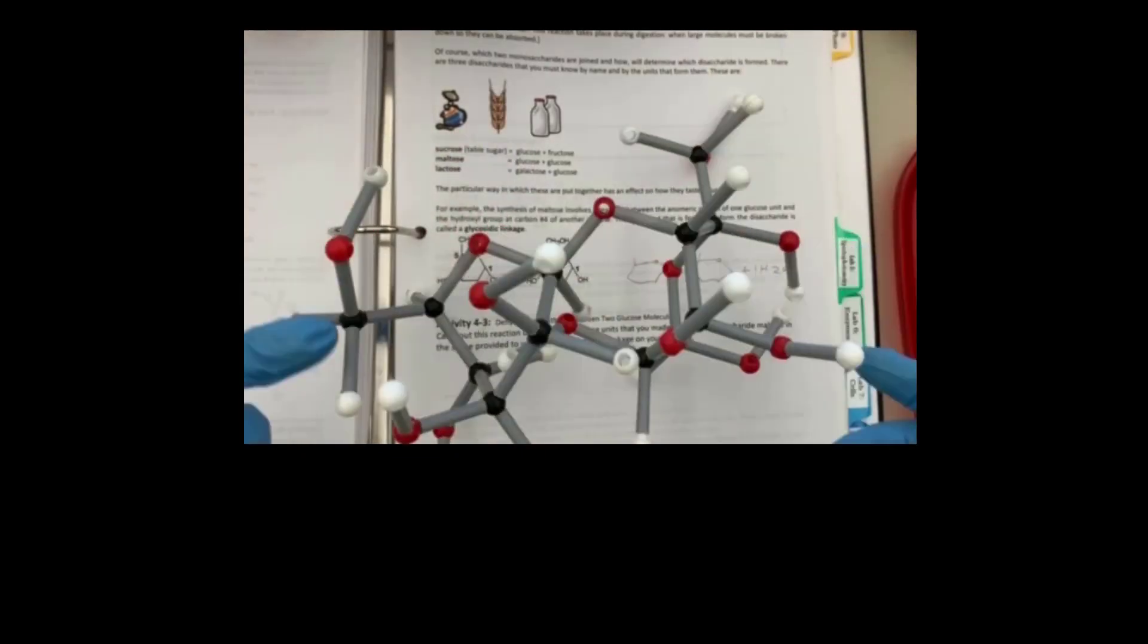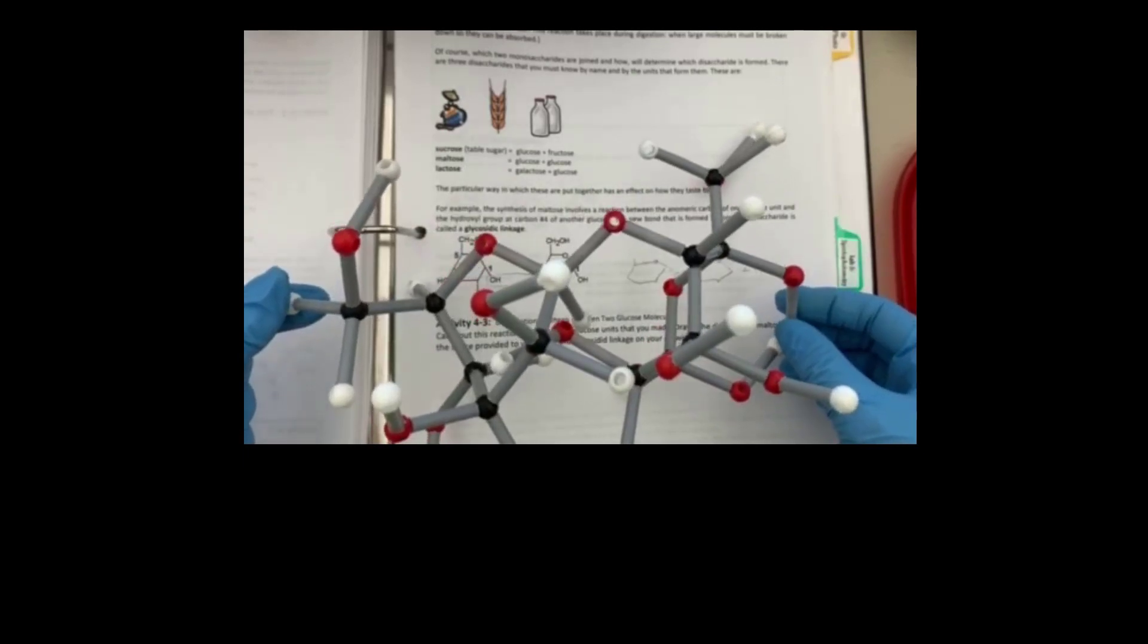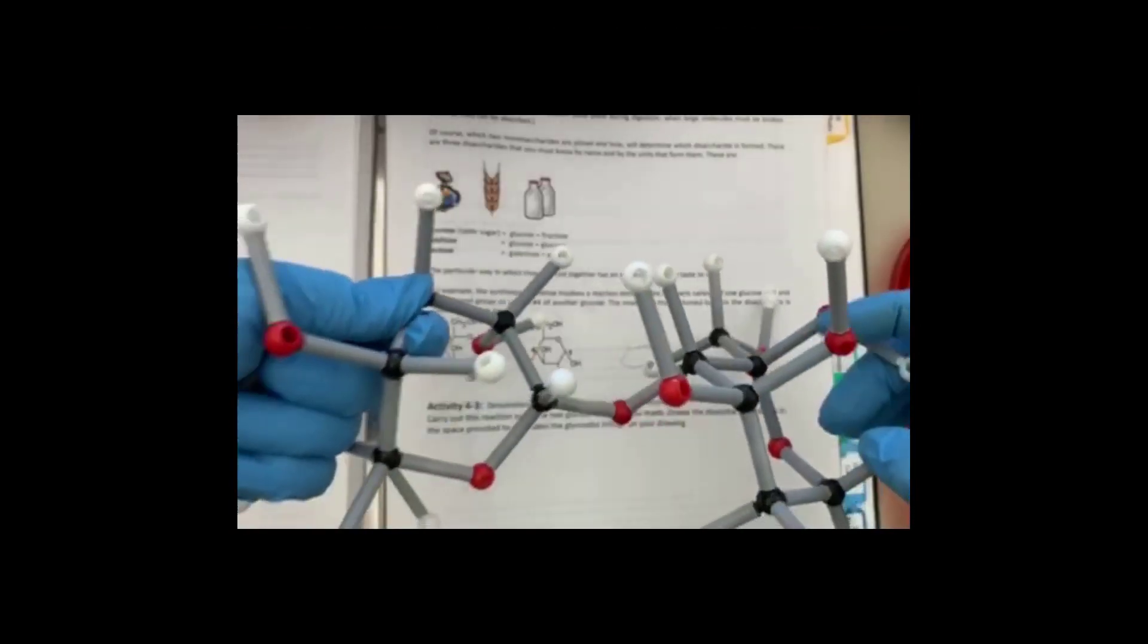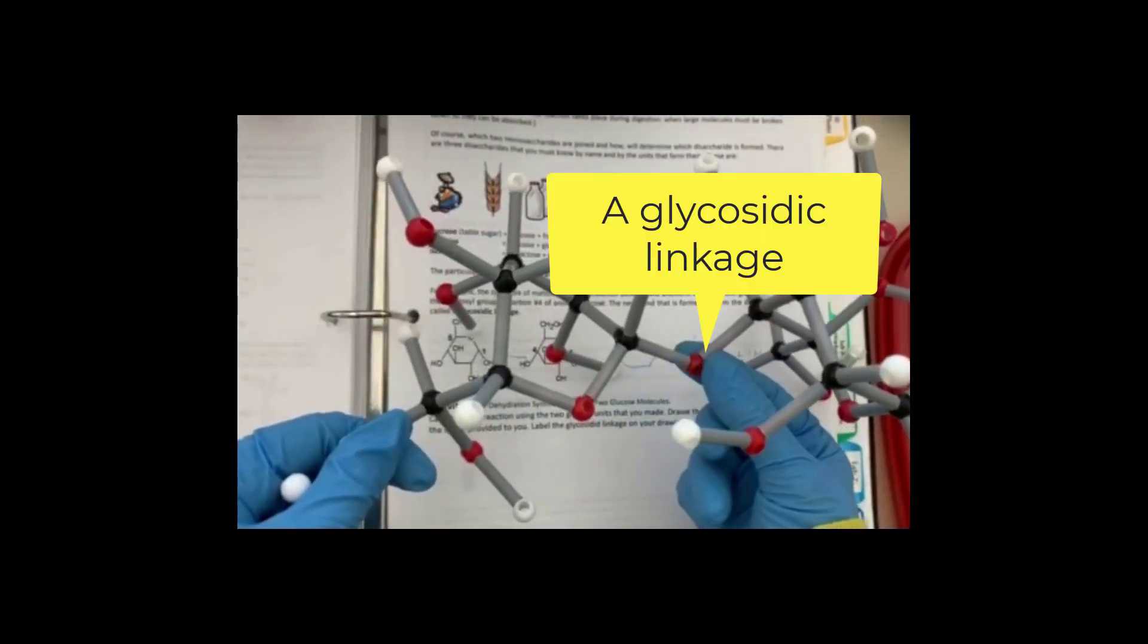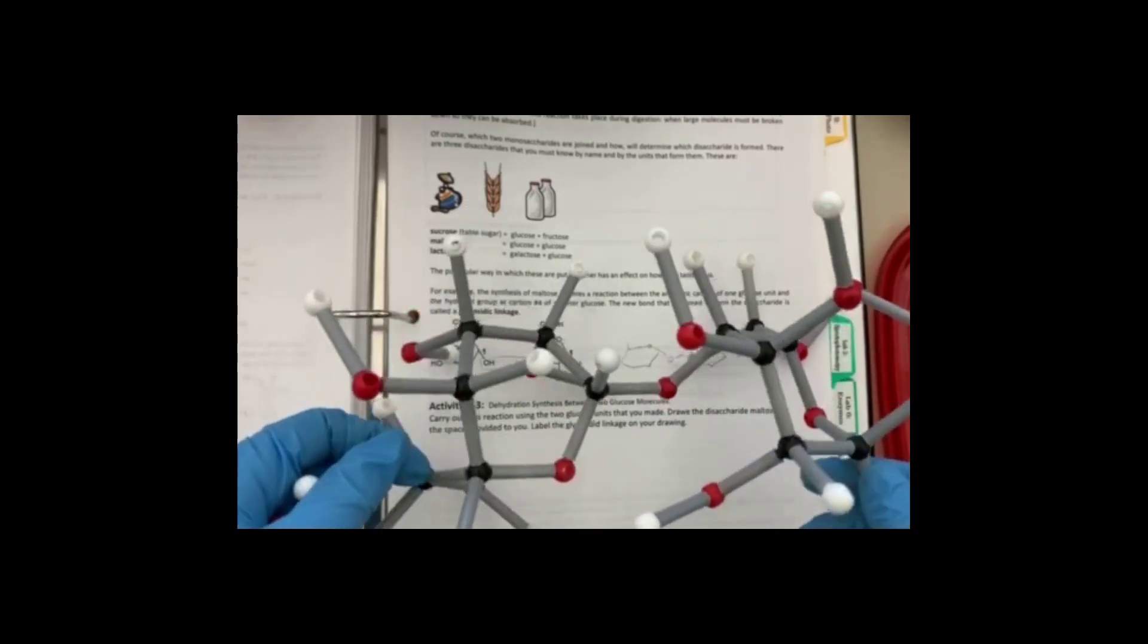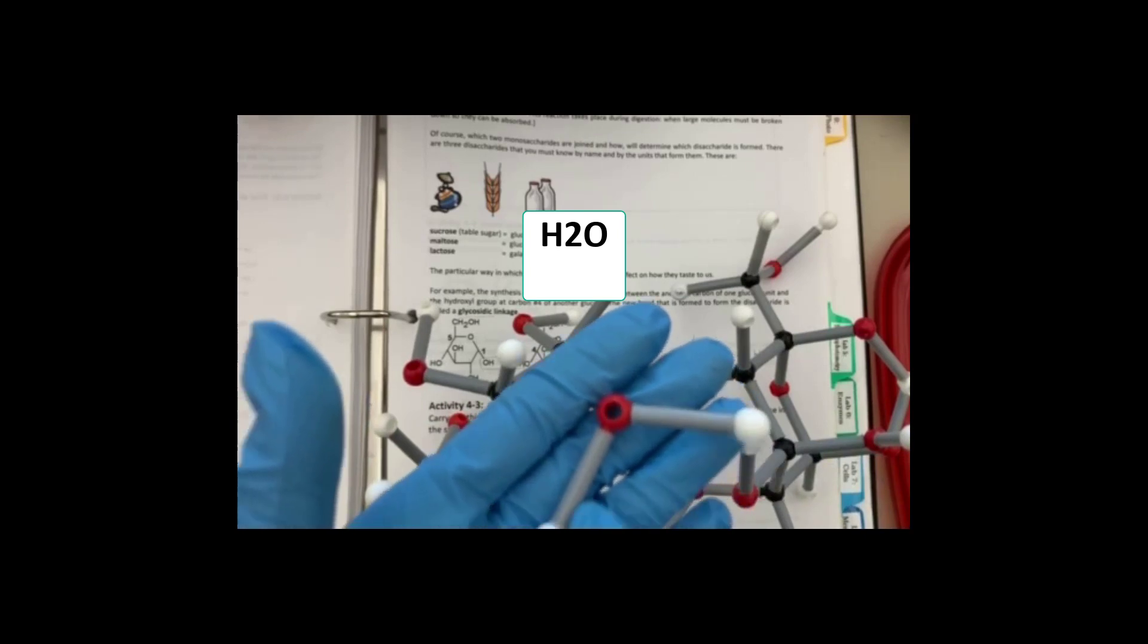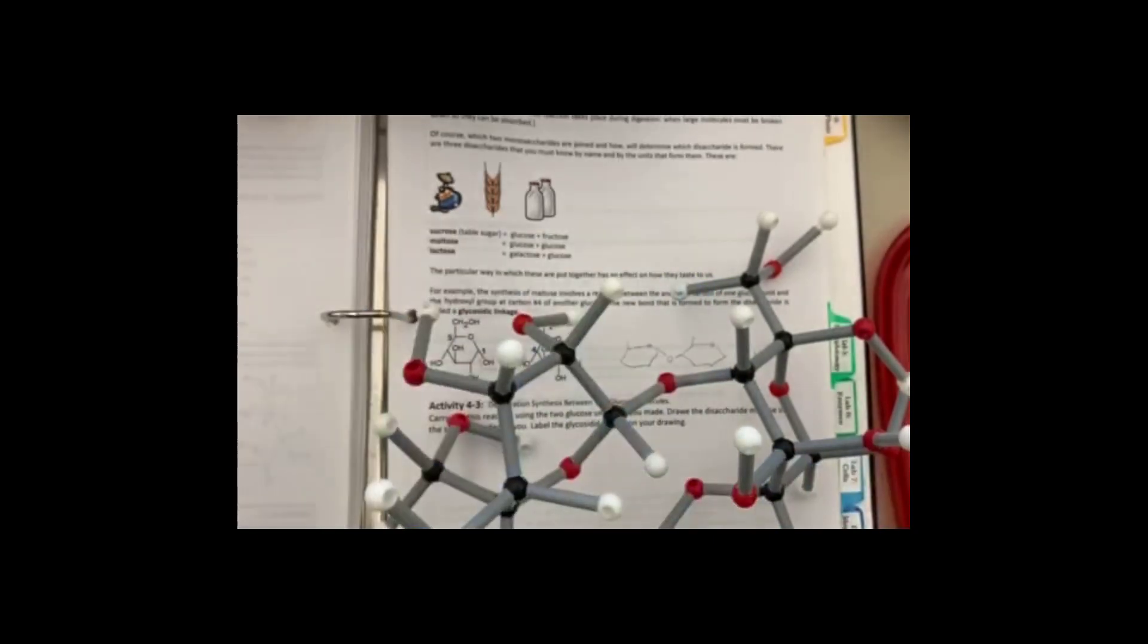So what is the name of this molecule? The name of this big molecule now is called a disaccharide. So what is the glycosidic linkage? This is the glycosidic linkage. Here. The name of this mechanism is called dehydration synthesis. When you make the bonds between two monomers. As you see here, one molecule of water is released during the dehydration synthesis.